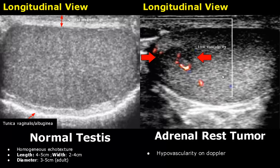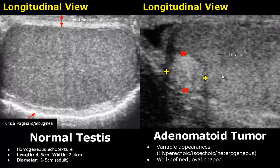Adenomatoid tumor has variable appearances — it can appear hyperechoic, isoechoic to the testis, or heterogeneous. Usually it is well defined and oval shaped.